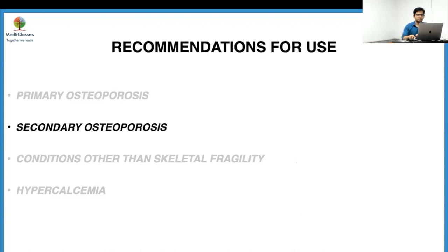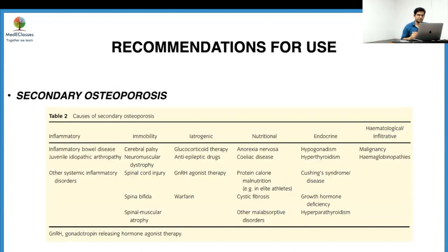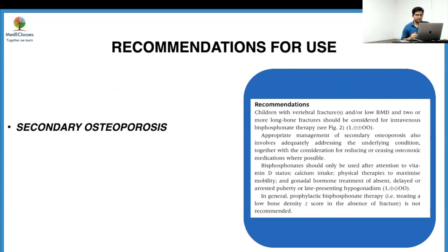Moving to secondary osteoporosis: there are multiple causes including inflammatory conditions, immobility, iatrogenic causes, and nutritional deficiencies. The guidelines focus mainly on cerebral palsy (CP). The general recommendation for secondary osteoporosis is that children with vertebral fractures and/or low BMD and two or more long bone fractures should be considered for IV bisphosphonate therapy.